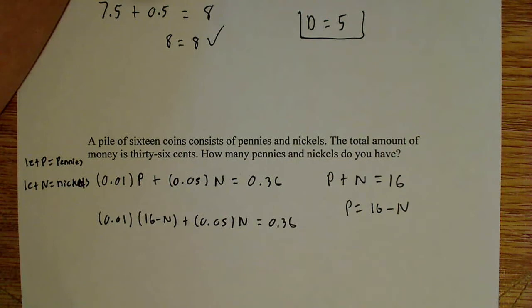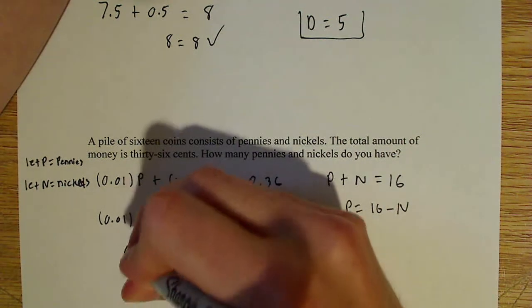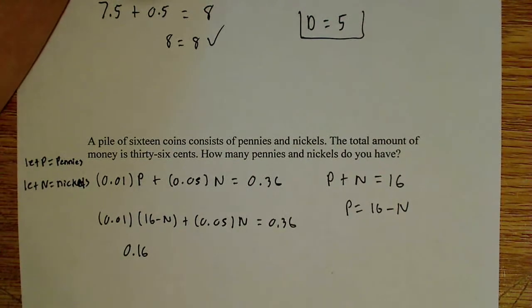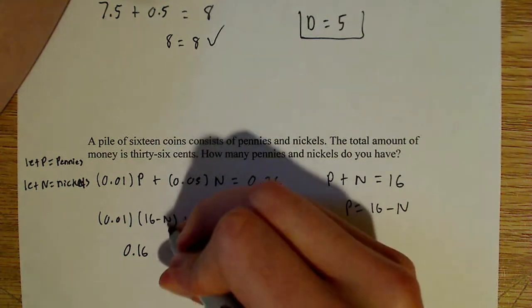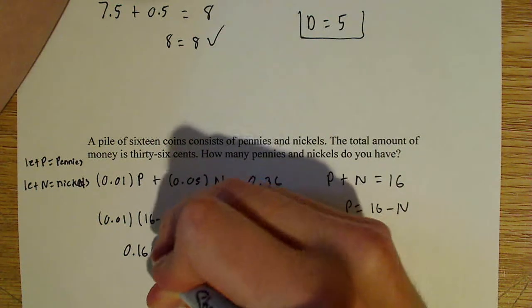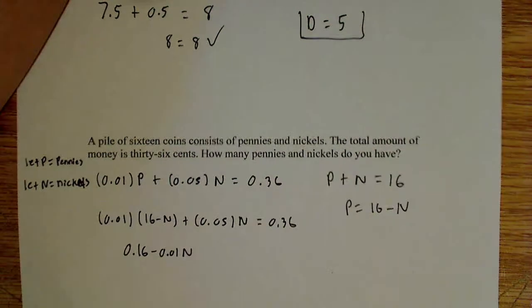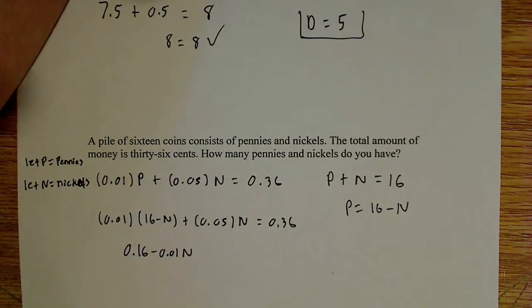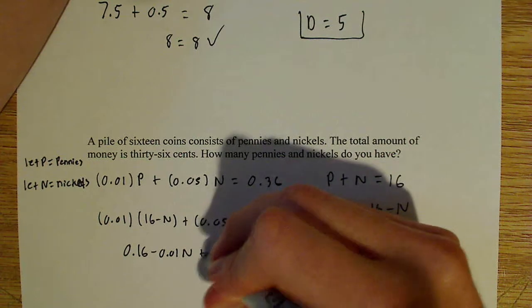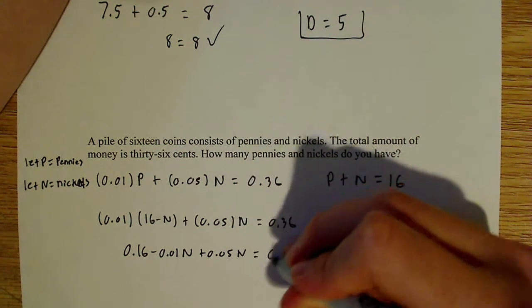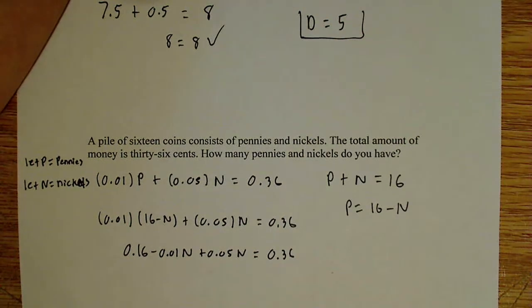So 0.01 times 16 will give me 0.16. And 0.01 times N, times a negative N, don't forget the negative N, gives me negative 0.01 N. And that's how that's done. Then this is just 0.05 N, and that all equals 0.36.